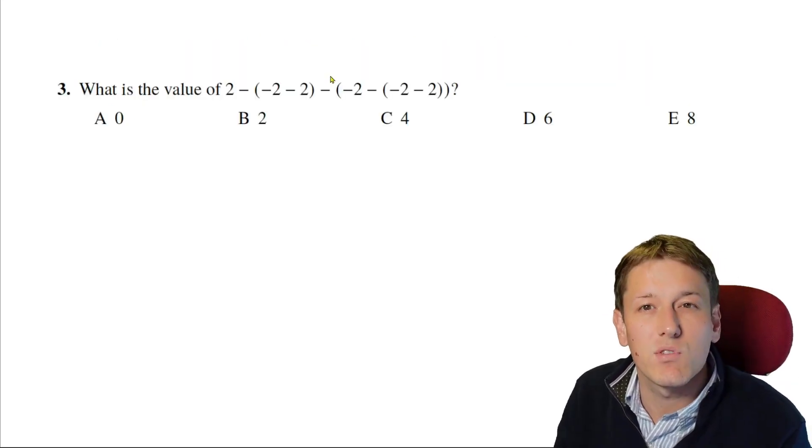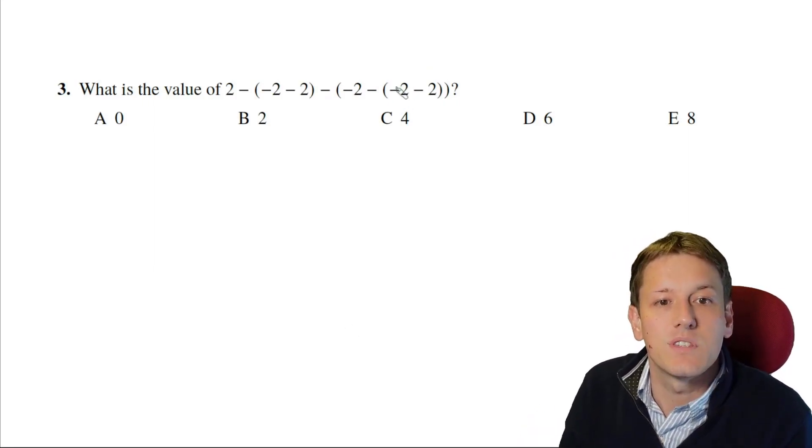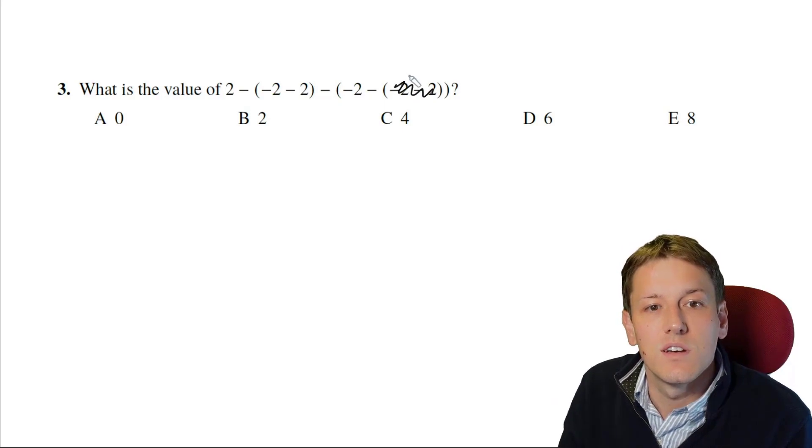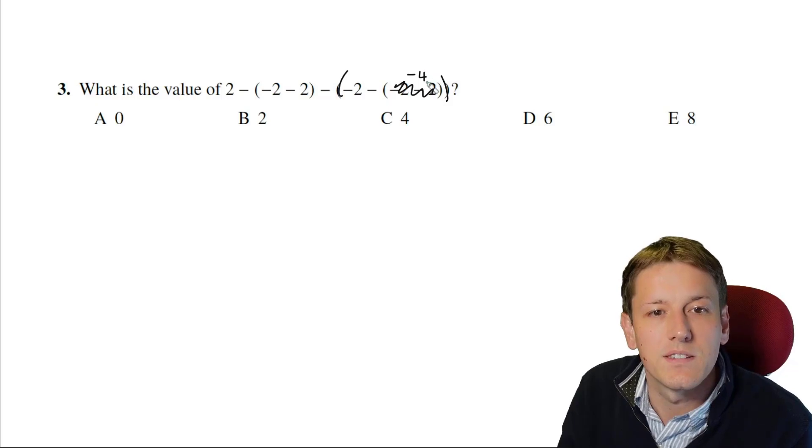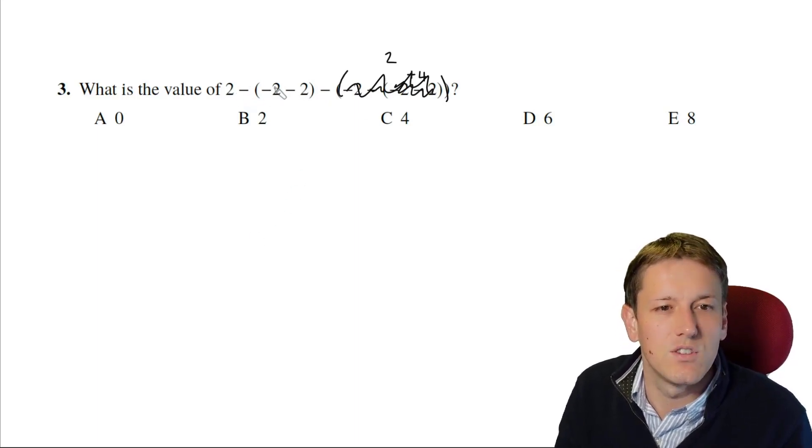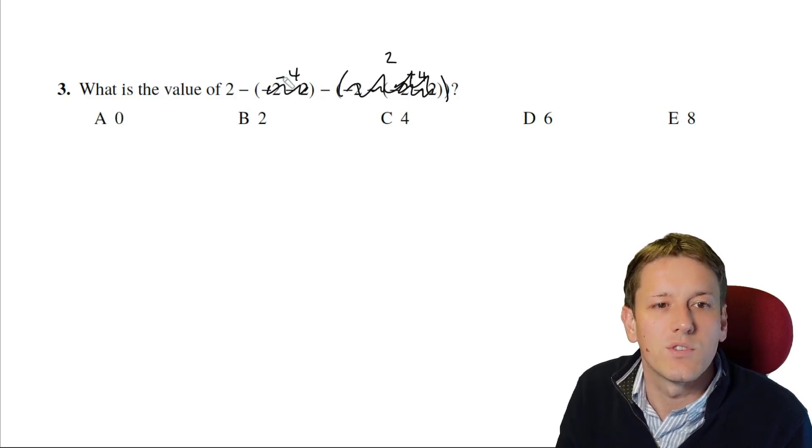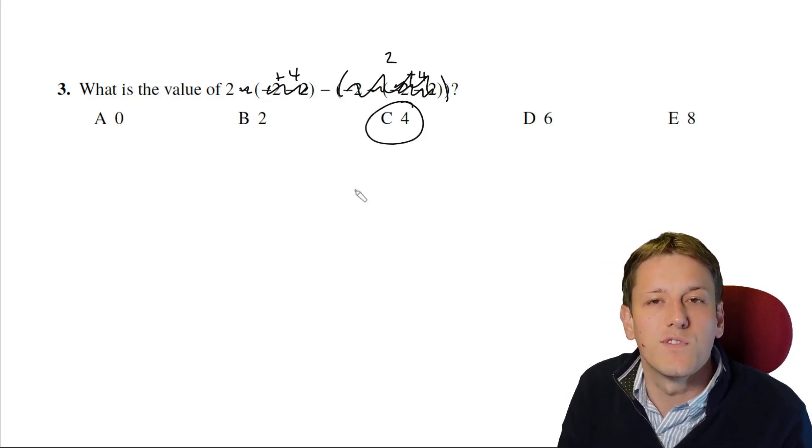In question three here, we've just got to remember to work the brackets from the inside ones out. So the innermost ones here are minus two minus two, and that would give me minus four. And then if I look at these brackets, now I've got minus two minus minus four. So that's minus two plus four, which is just two. And now I've got two minus, and then this bracket is minus two minus two. So that one is minus four. So I've got two minus minus four, that's two plus four, and then minus two. So I'm left with six minus two, which is four. And that is the final answer.